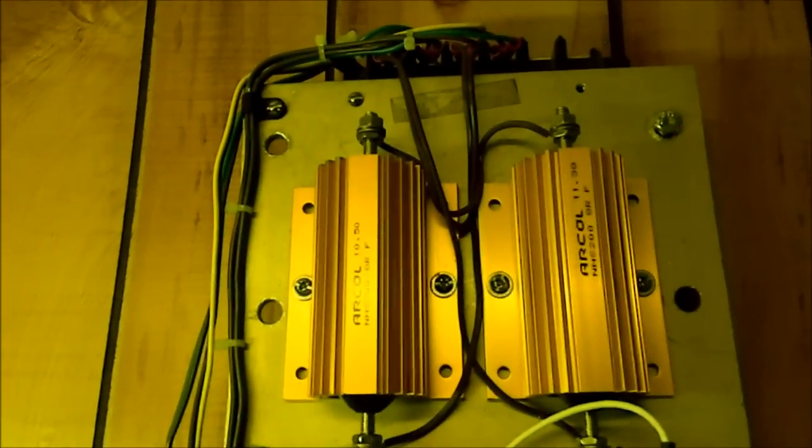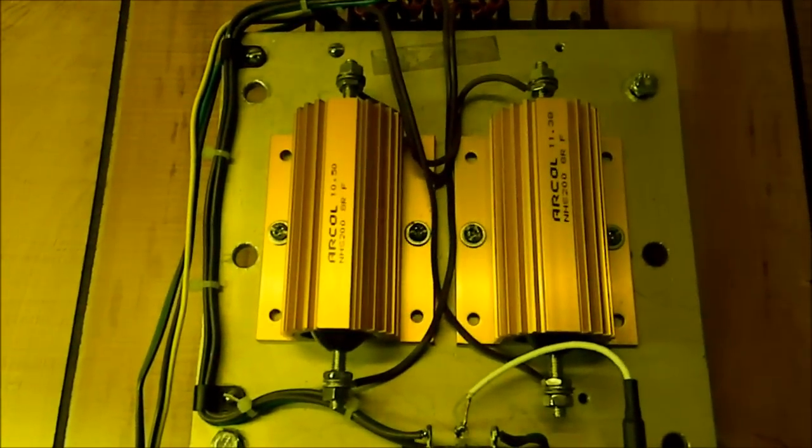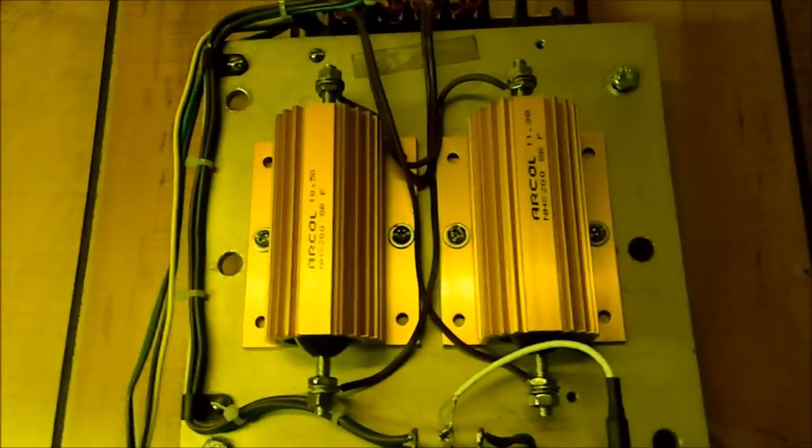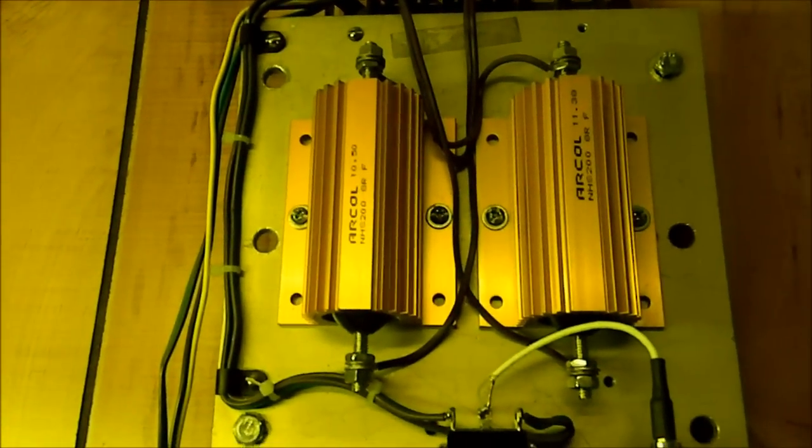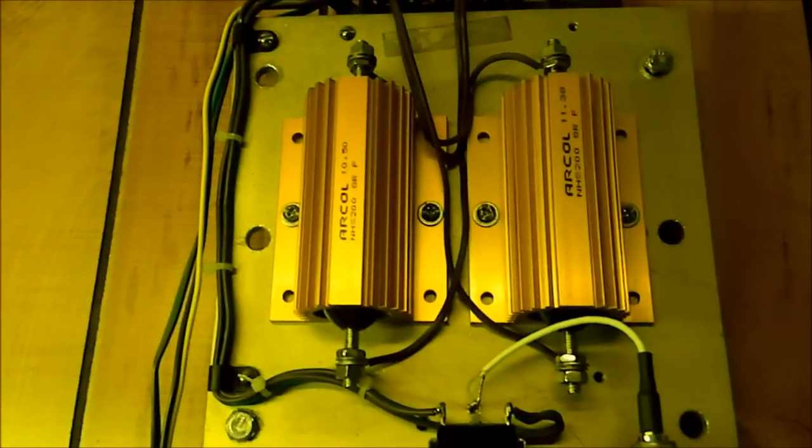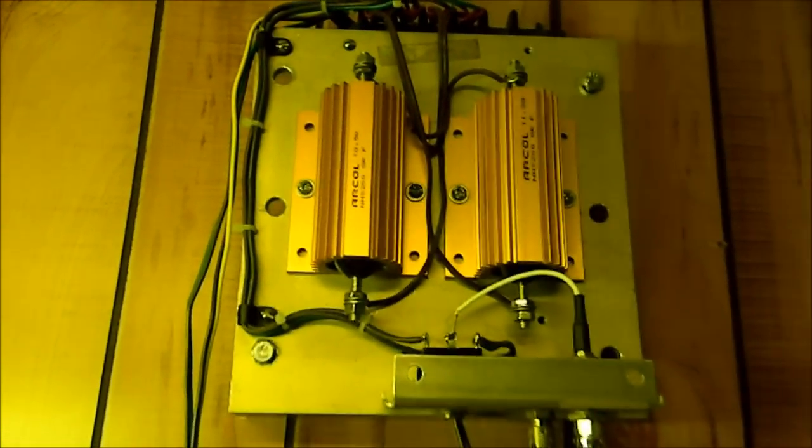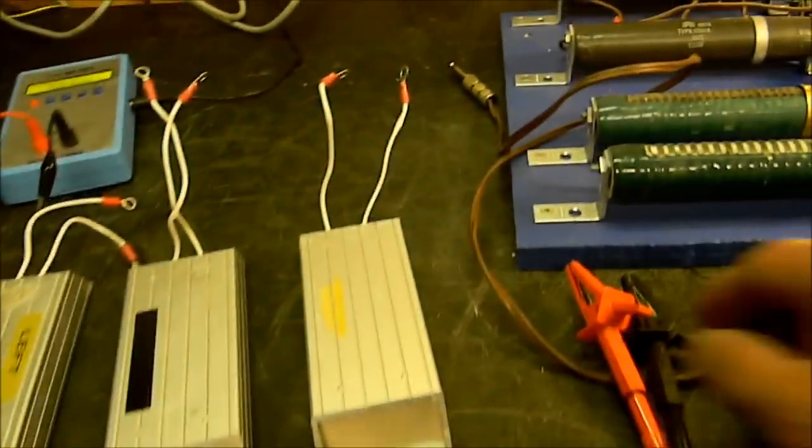Then I have these precision ones up here - these are ARCOL resistors, described as low inductance. Got them from Mouser.com. I love these. They're one percenters with a very low temperature coefficient, meaning they don't change resistance when they get hot. They're excellent, highly recommended, but precision resistors aren't necessary if you just want to dissipate heat.